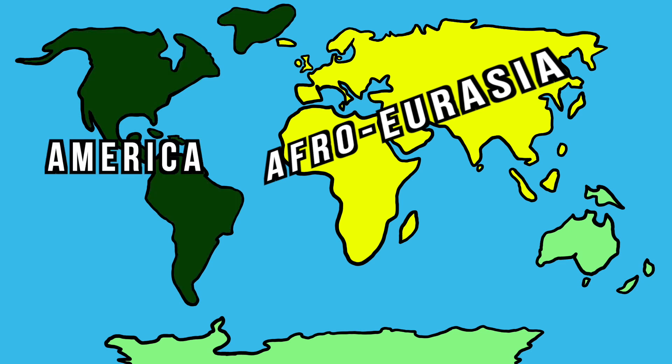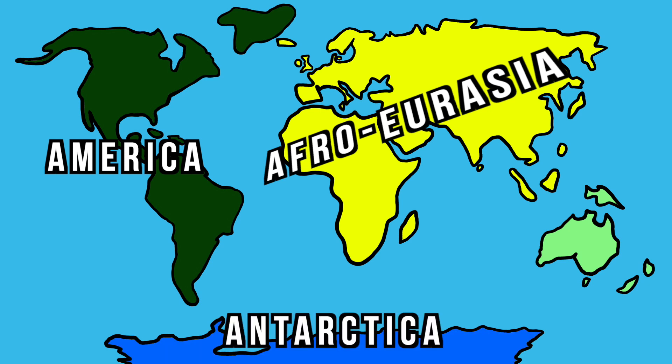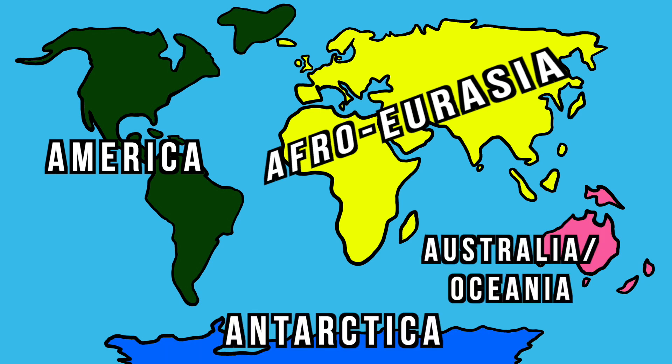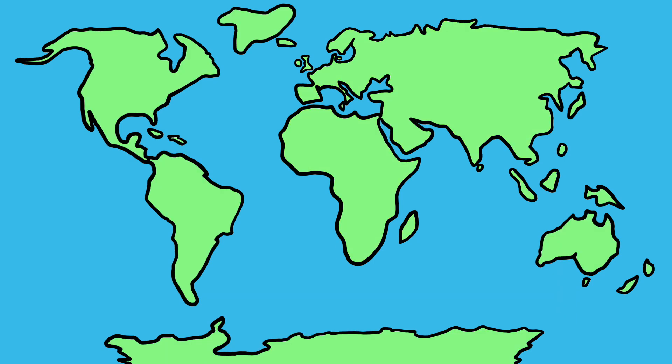The four continent model also includes America, which consists of North and South America combined into one big continent, Antarctica, and Australia slash Oceania — consisting of Australia, New Zealand, New Guinea, as well as Melanesia, Micronesia, and the Polynesian Islands.